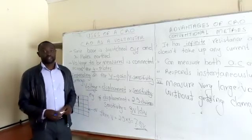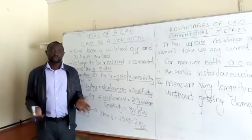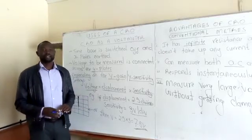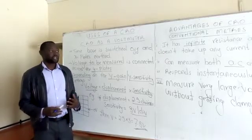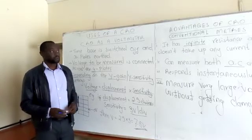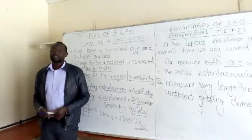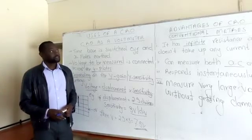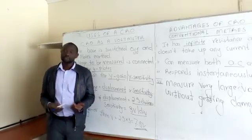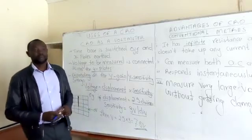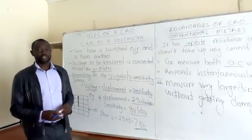By the end of the session you should be in a position to explain the two uses of a CRO and also do a few calculations on the same — that is, solve a few problems concerning the uses of a CRO. We have two uses of a CRO: one, we use the CRO as a voltmeter, and two, we use the CRO to determine the frequency of an alternating current.